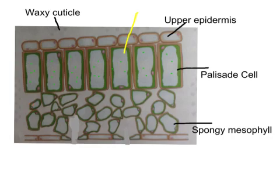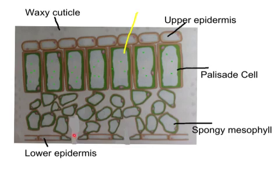Underneath the spongy mesophyll you have the lower epidermis, which closes the bottom half of the leaf. Unlike the upper epidermis, it doesn't have a large waxy cuticle, so the bottom of the leaf usually feels less smooth and less glossy. Along the lower epidermis we find tiny pores or holes called stoma — the plural of stoma is stomata.